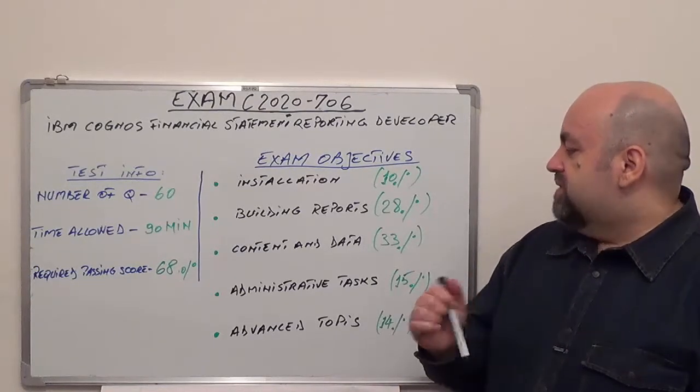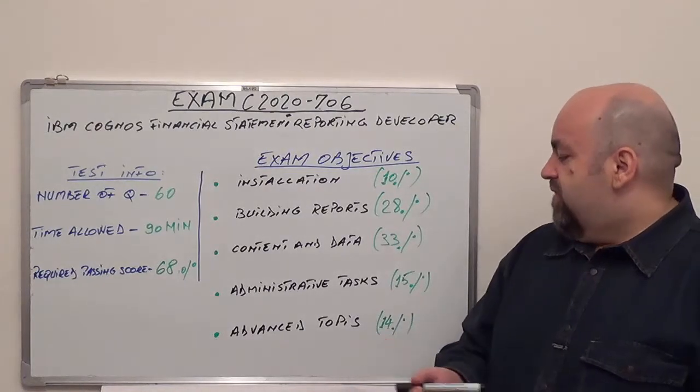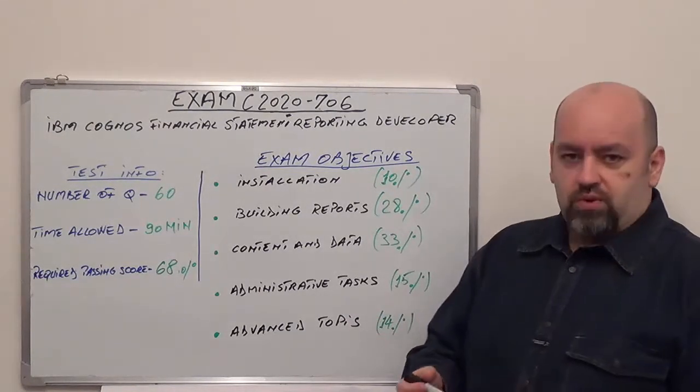The fourth one is going to be Administrative Tasks with 15% of the total questions. And the last one is going to be Advanced Topics with 14% of the total questions.